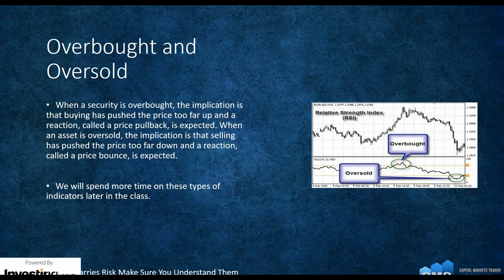Then we go to our fifth category: overbought and oversold. When a security is overbought, the implication is that buying has pushed the price too far up and a price pullback is expected. When an asset is oversold, selling has pushed the price too far down and a price bounce is expected. We'll spend more time on these types of indicators later in the class. But remember: overbought and oversold markets can remain in those positions for indefinite periods.